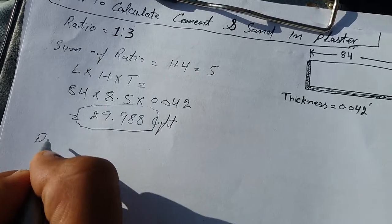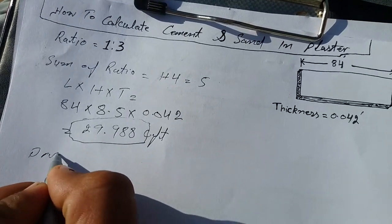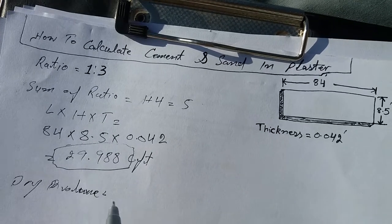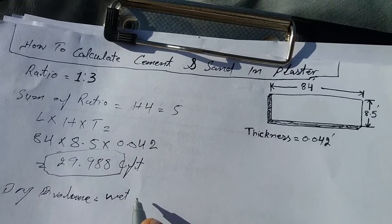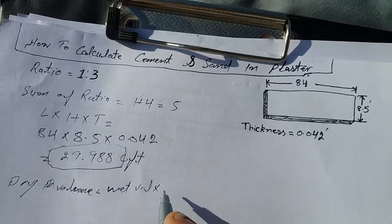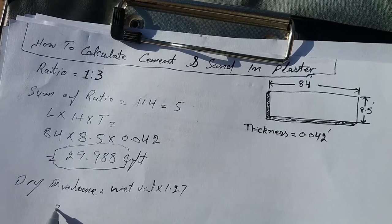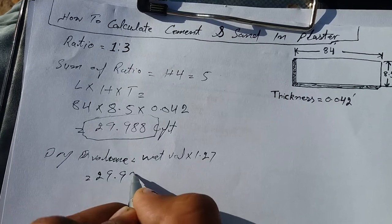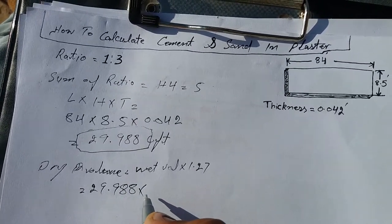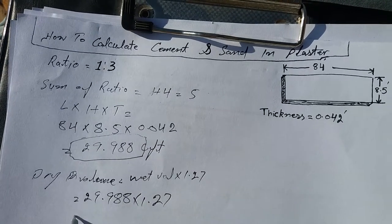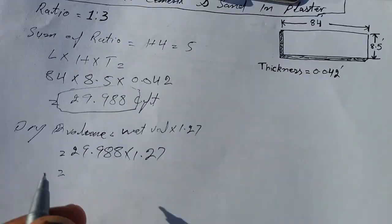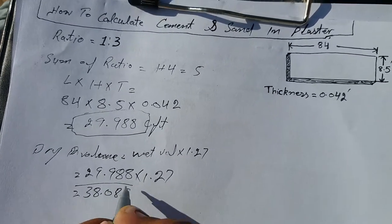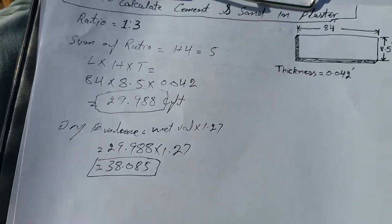So we will convert it to dry volume. Dry volume equals wet volume times 1.27. So wet volume is 29.988 times 1.27, which equals 38.085.